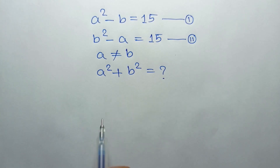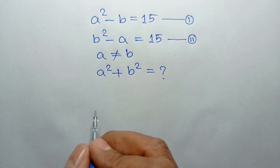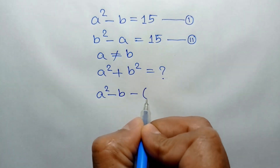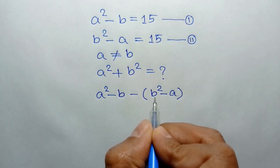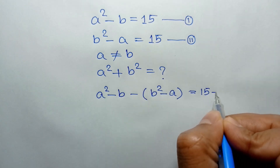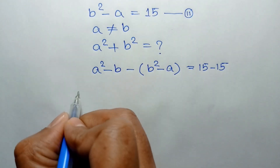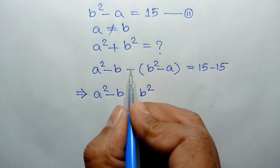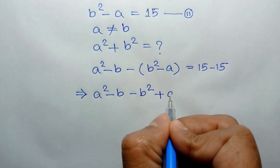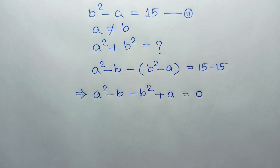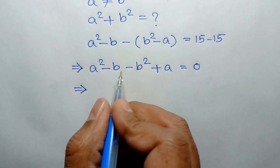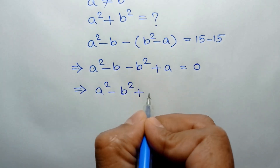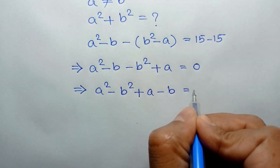If we subtract equation 2 from equation 1, we can write: A squared minus B (from equation 1) minus (B squared minus A) from equation 2 is equal to 15 minus 15. This gives A squared minus B minus B squared plus A equals 0. Rearranging the left side, we can write A squared minus B squared plus A minus B is equal to 0.